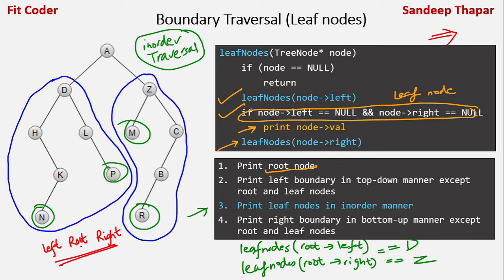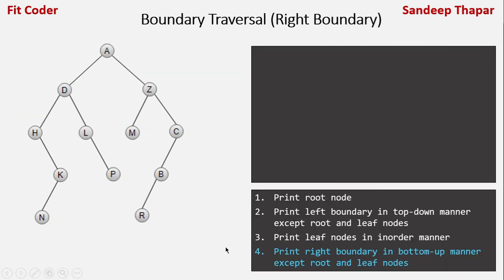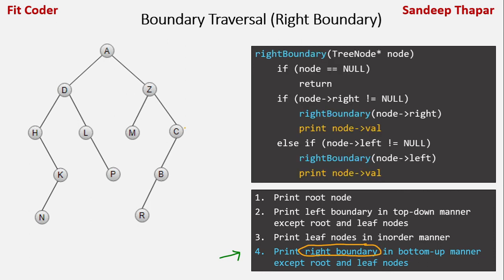Now for the fourth step, we print the right boundary in bottom-up manner. We must traverse down to the bottom first, so we traverse the right subtree before the left, and print the node in post-order form.